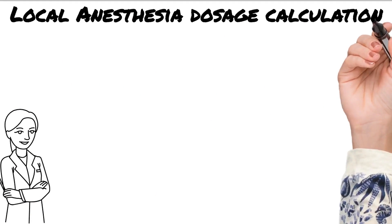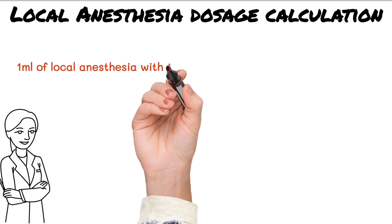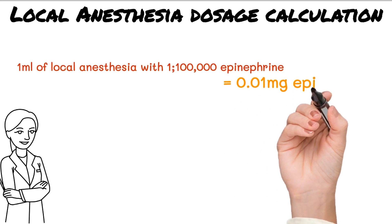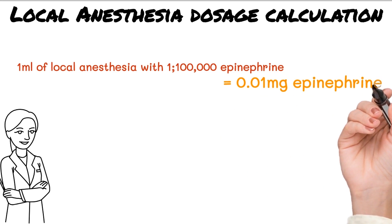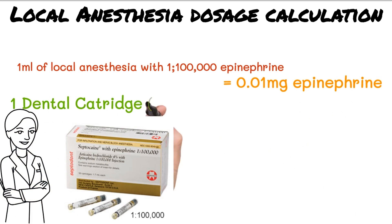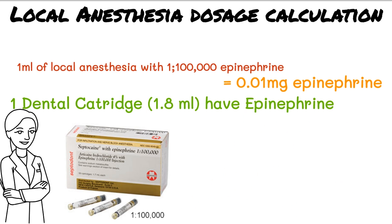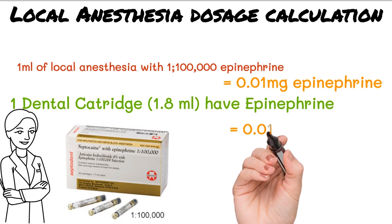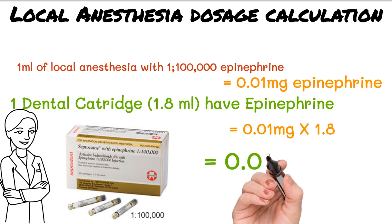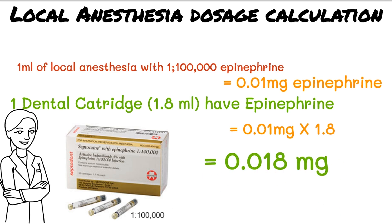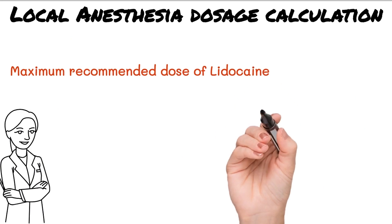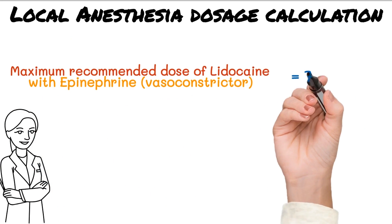One milliliter of local anesthesia with 1:100,000 epinephrine equals 0.01 milligrams of epinephrine. Since one dental cartridge is 1.8 milliliters, the epinephrine in a 1.8 milliliter cartridge equals 0.01 milligrams multiplied by 1.8, which equals 0.018 milligrams of epinephrine.